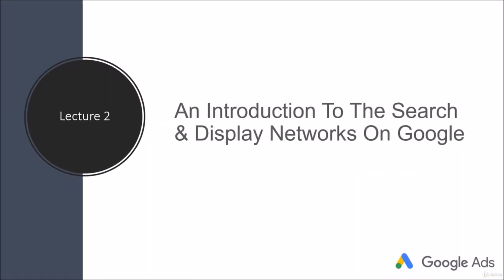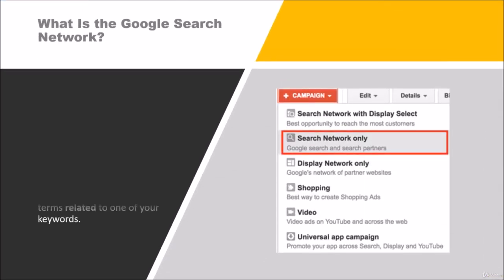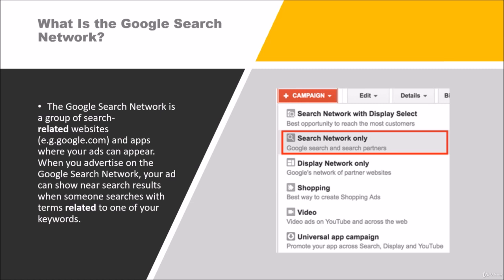Lecture 2: An Introduction to the Search and Display Networks on Google. The Google Search Network is a group of search-related websites, for example Google.com, and apps where your ads can appear. When you advertise on the Google Search Network, your ad can show near search results when someone searches with terms related to one of your keywords.